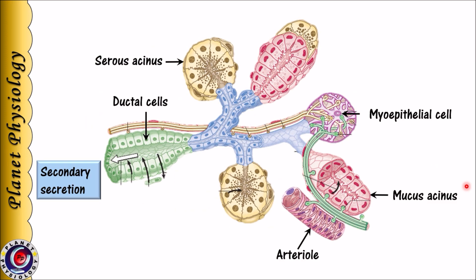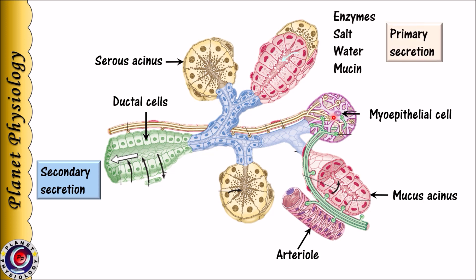Let us quickly revise the important points with the help of a diagram. Shown in brown colour are the serous acini with zymogen granules in the cells. Pink colour represents the mucous acini with mucin droplets in the cells. The violet-coloured cells are the myoepithelial cells surrounding the acini. Acinar cells secrete enzymes, glycoproteins, salt, water, and mucin into the lumen of the acini, constituting primary secretion.